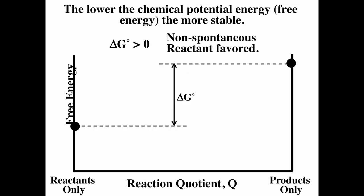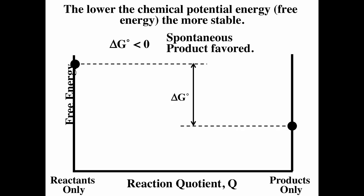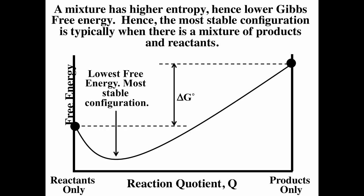If ΔG° is greater than zero, it is a non-spontaneous, reactant-favored reaction because the reactants have lower potential energy and are more stable. If ΔG° is less than zero, it is a spontaneous, product-favored reaction — the products have lower energy and are more stable — corresponding to ΔS_universe being positive.